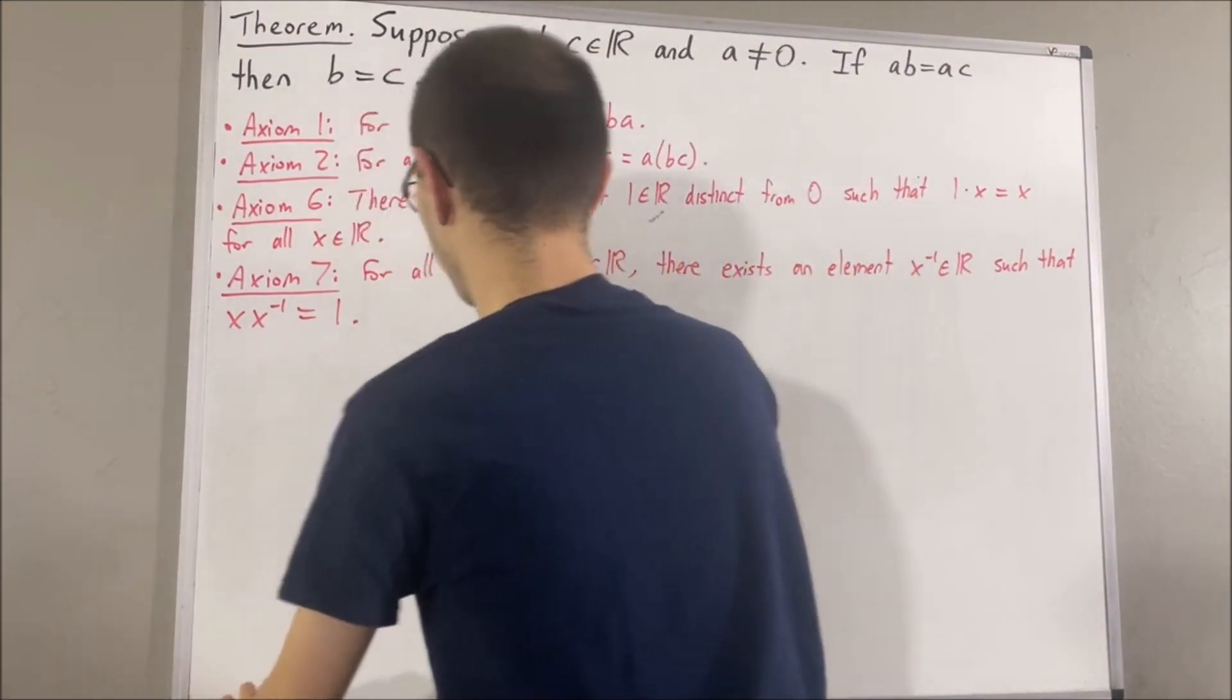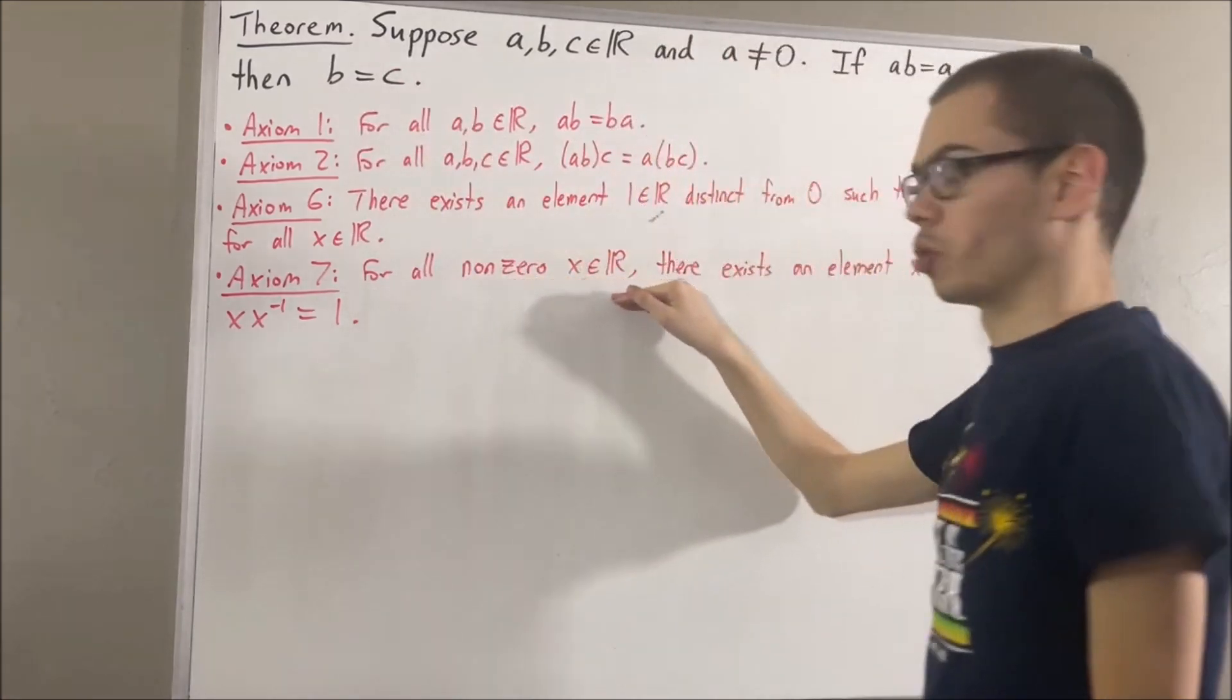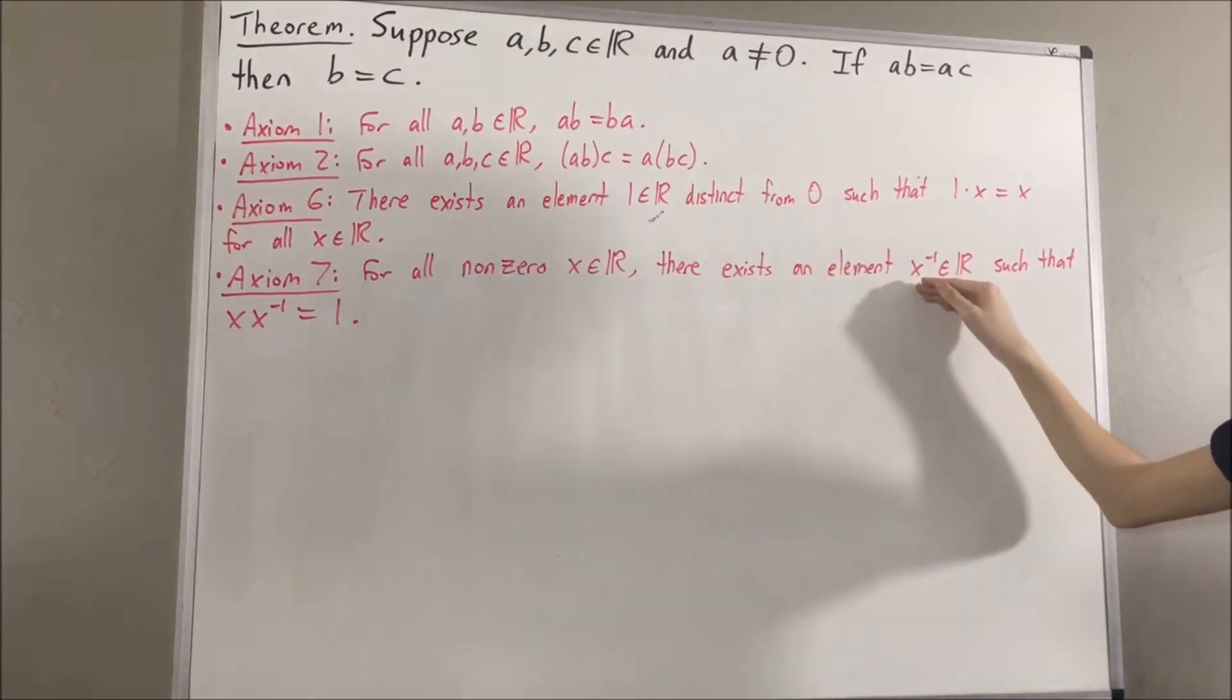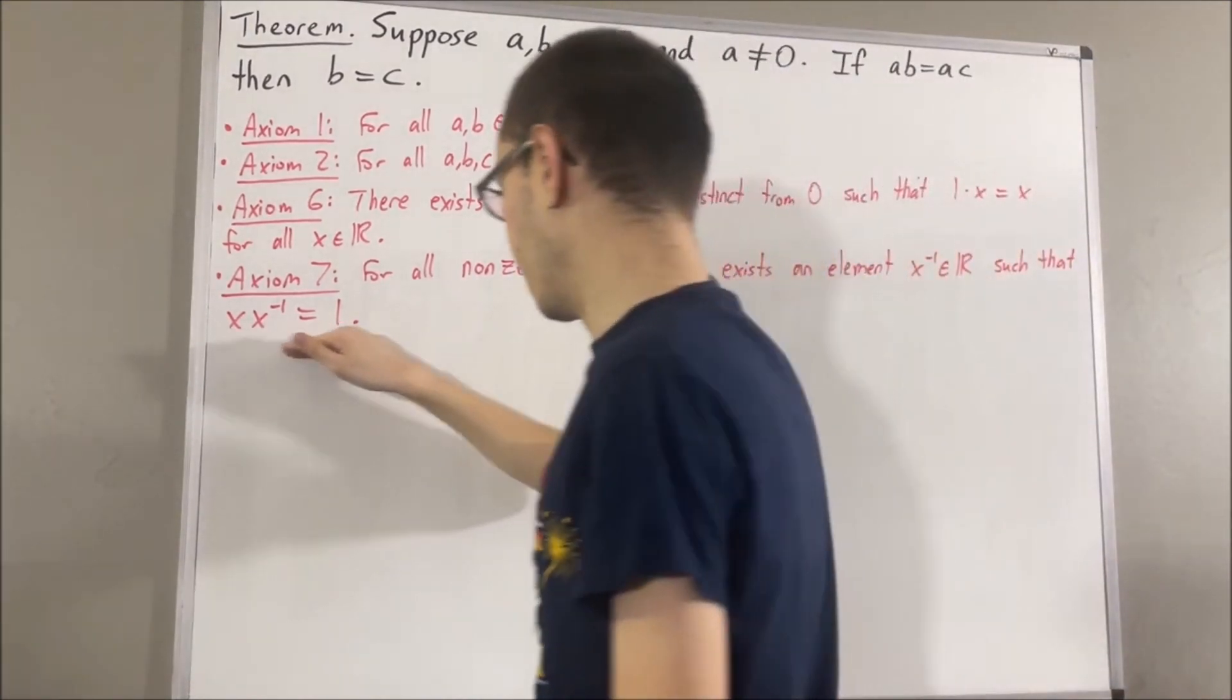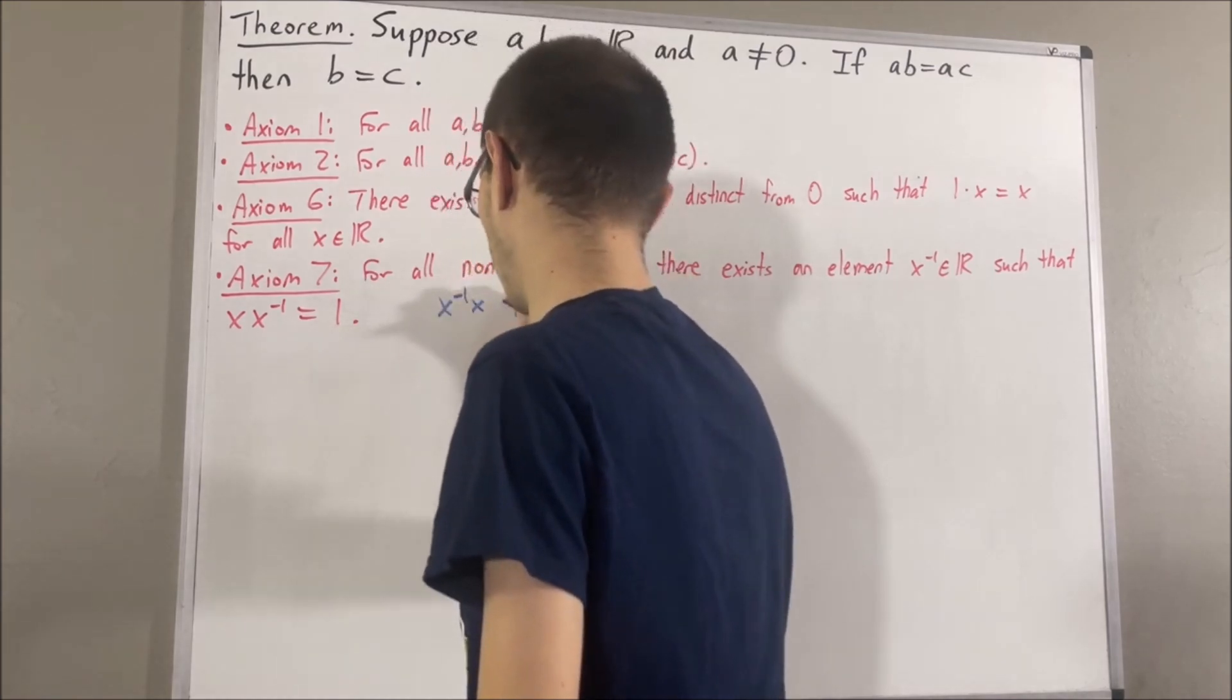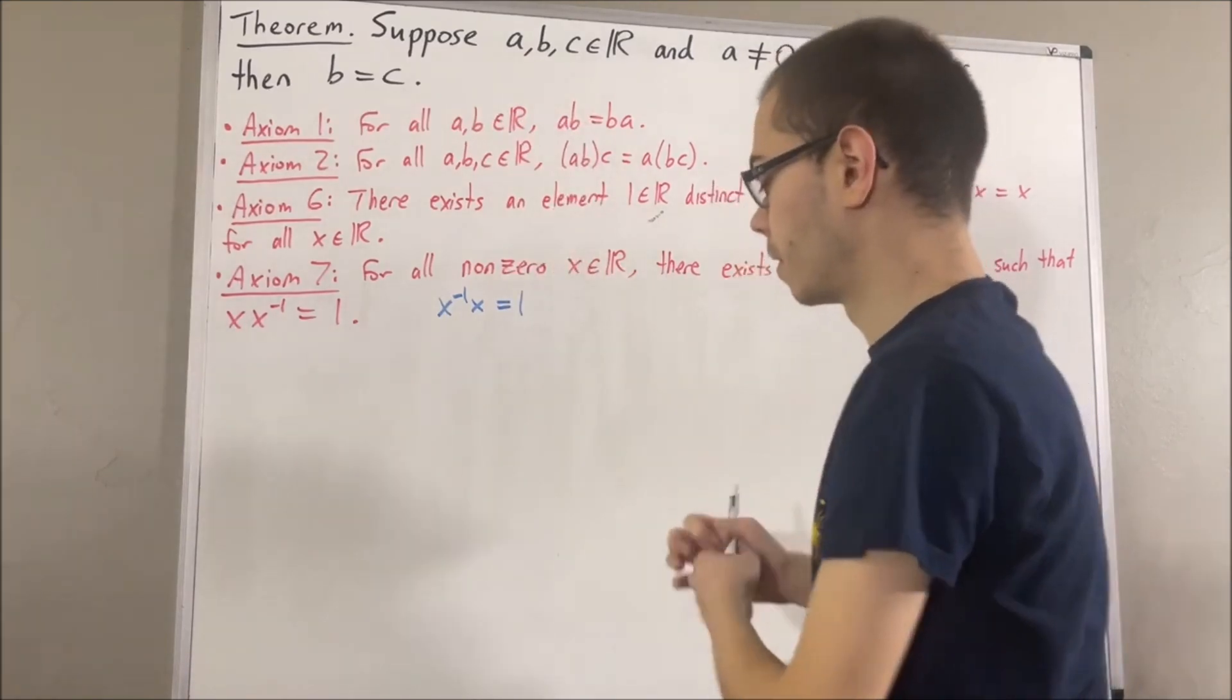Now, a thing to notice here is, by axiom 1, we have, for every non-zero real number x, this real number which we call the reciprocal of x, not only does it satisfy this equality, but it will also satisfy this equality. Right? You just apply axiom 1.